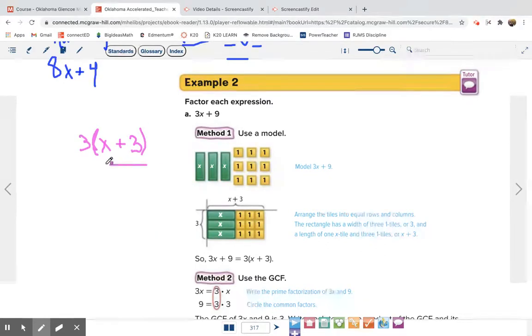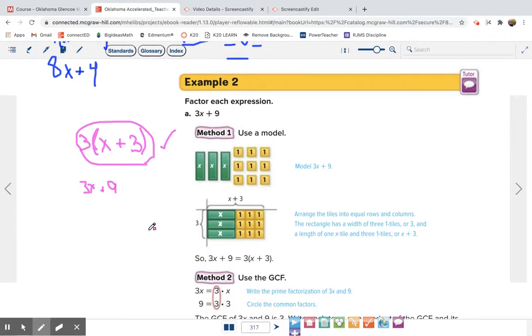Okay, that would be my answer. That's my factored answer. If you need to check yourself, distribute it back in. 3 times x is 3x. There's a plus between them. And then 3 times 3 is 9. 3x plus 9. That's what we started with. So yes, we did it correct.